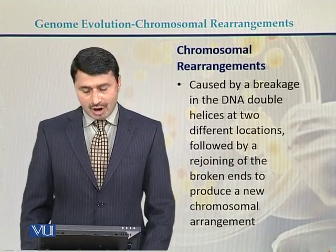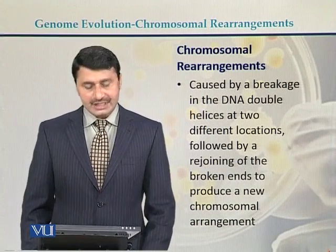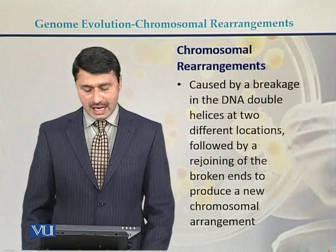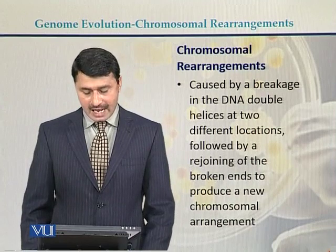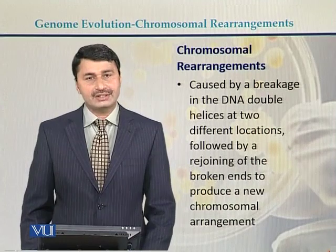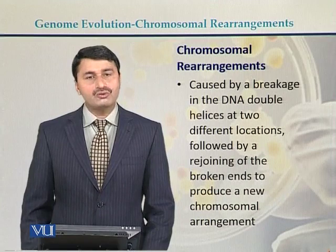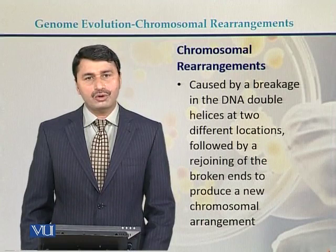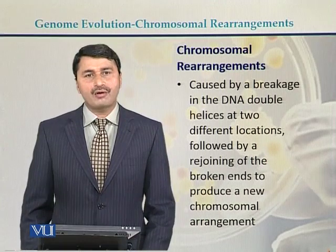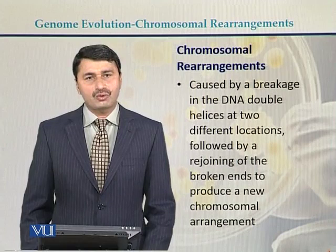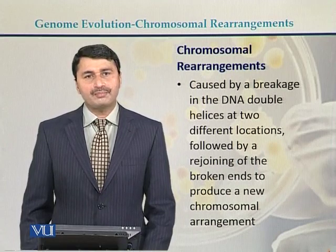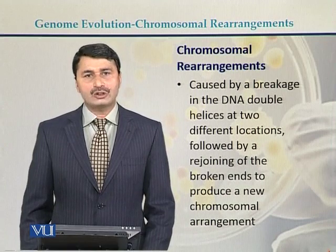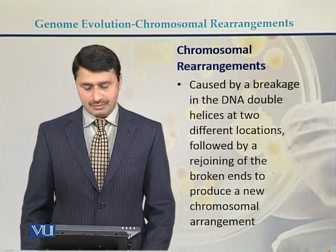Chromosomal rearrangements are caused by a breakage in a DNA double helix at two different locations, followed by a rejoining of the broken ends at different places, which produces a new chromosomal arrangement. Instead of joining the broken ends at the original position from where the DNA was broken, they join to different places, and that is what produces chromosomal rearrangements.